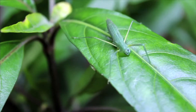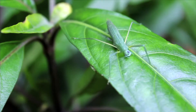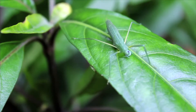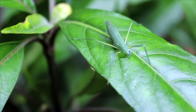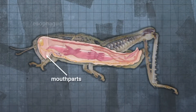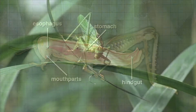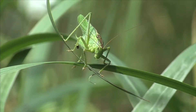Arthropods are invertebrate animals whose digestive functions take place in specialized cavities that are connected to form a continuous canal. The alimentary canal includes a foregut consisting of the mouth parts and esophagus, the midgut or stomach, and the hindgut where undigested food is excreted through the anus as feces.